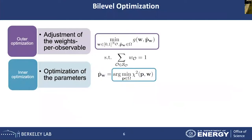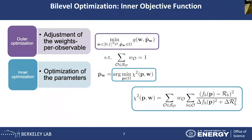Our formulation has an outer optimization with objective function g, with the constraint that the summation of weights equals 1, and an inner optimization to find the best parameter values, where we minimize the chi-square values.